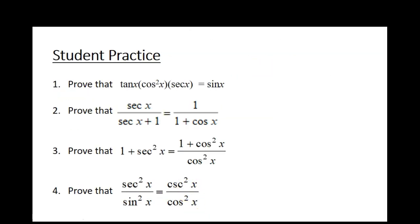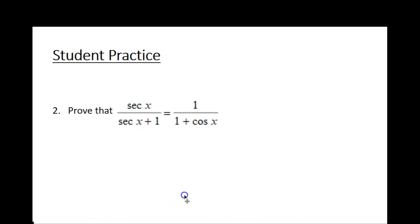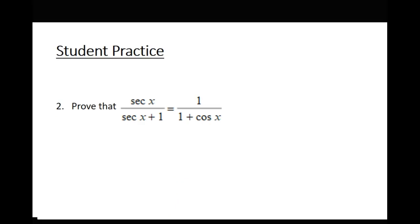I'm going to have you guys do number 2 this time. There you go. So the first thing we're going to do is we're going to replace secant with 1 over cosine. Abby. Abby, what's next? Multiply everything. Multiply everything by the denominator, which in this case is cosine.